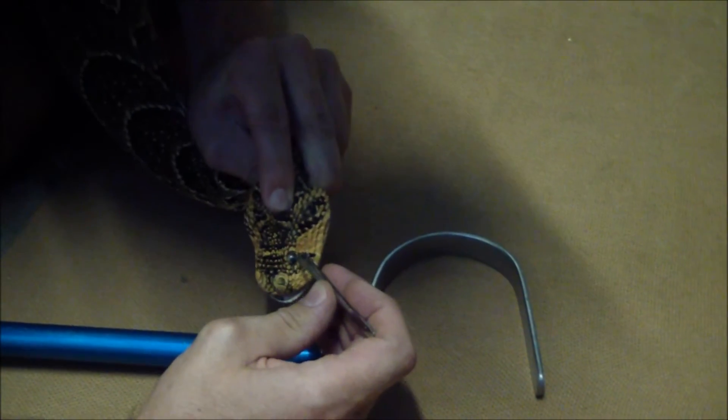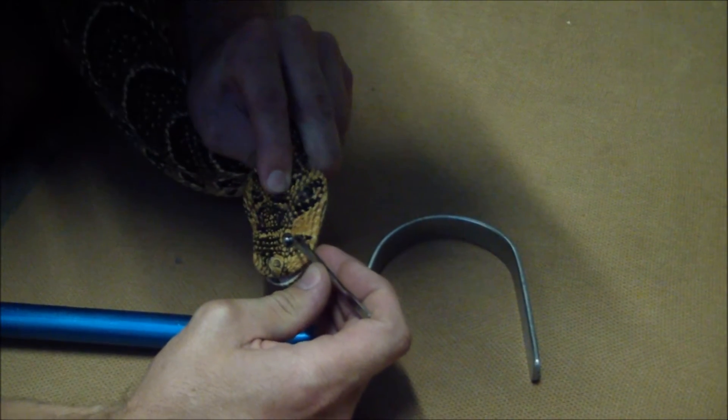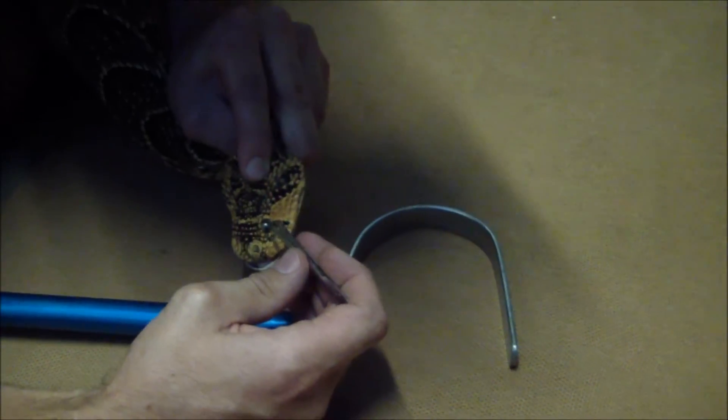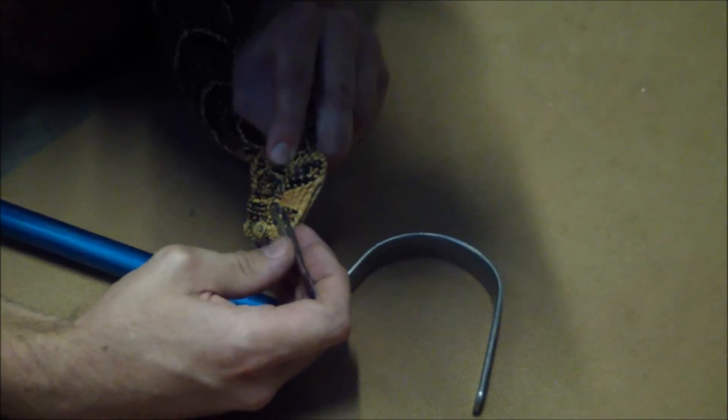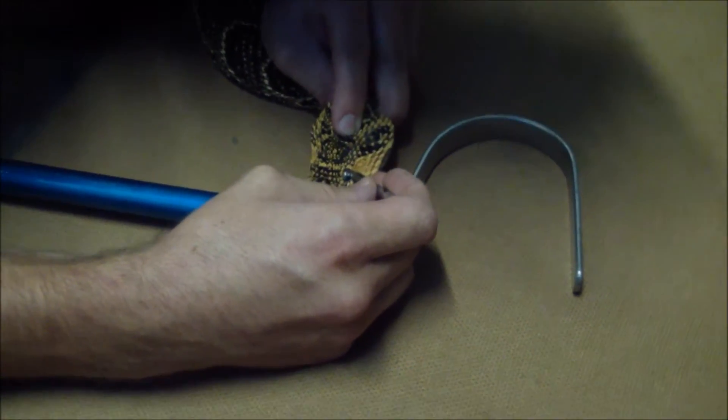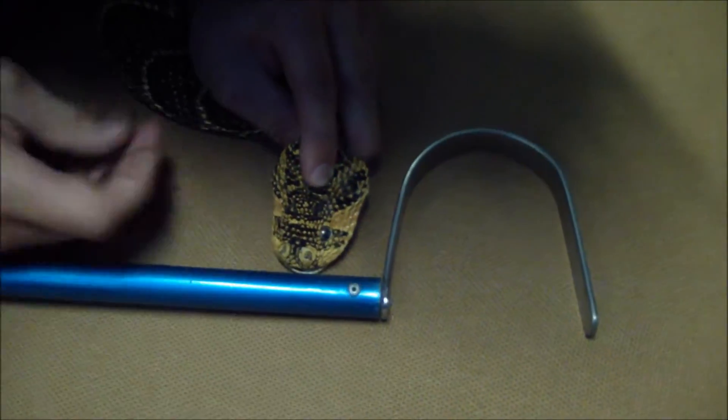I've removed quite a lot of eye caps from venomous snakes like this. Sometimes they can be stuck a little worse than other times. This one does look pretty well stuck down.